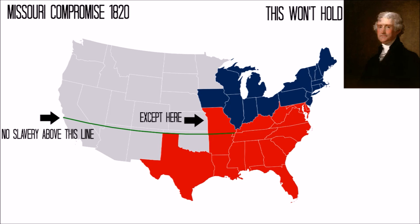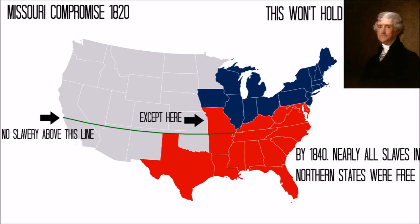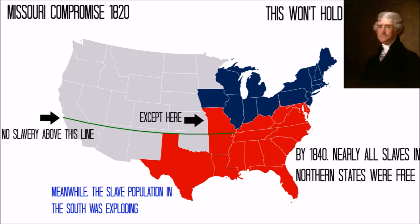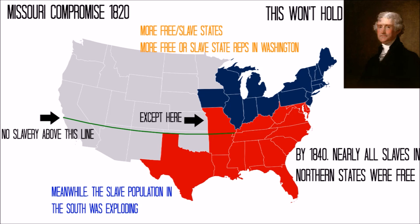By 1840, from various efforts at the state level, nearly all slaves in northern states were free. In contrast, the booming cotton industry ensured the slave population in southern states continued to explode. Both the North and the South were eager to expand and bring new free and slave states into the Union respectively. More slave states would mean more representation for slavery in Washington, and vice versa. Every new territory admitted to the nation was a potential landmine for conflict.